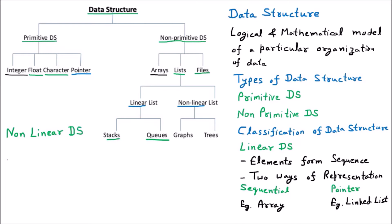We have started our journey with the types of data structure. We have learned the primitive and non-primitive. Then we have gone through the classification. In the first classification we have gone with the linear data structure which is like array, linked list, stack and queue.